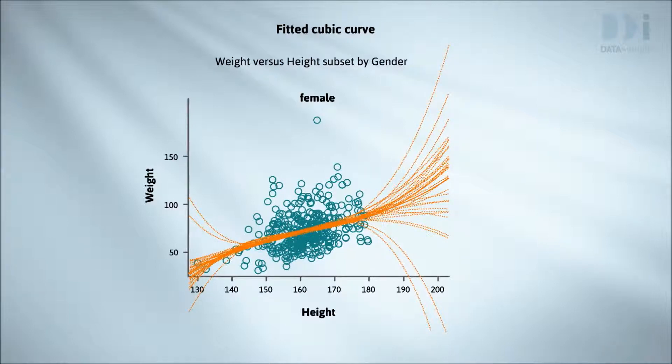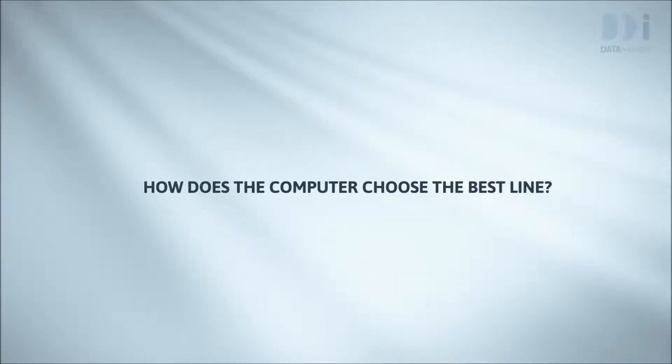But that's getting ahead of ourselves. We'll now address the question of how the computer decides precisely what line or curve to put on a scatter plot. We'll explain this in the context of choosing the best line.